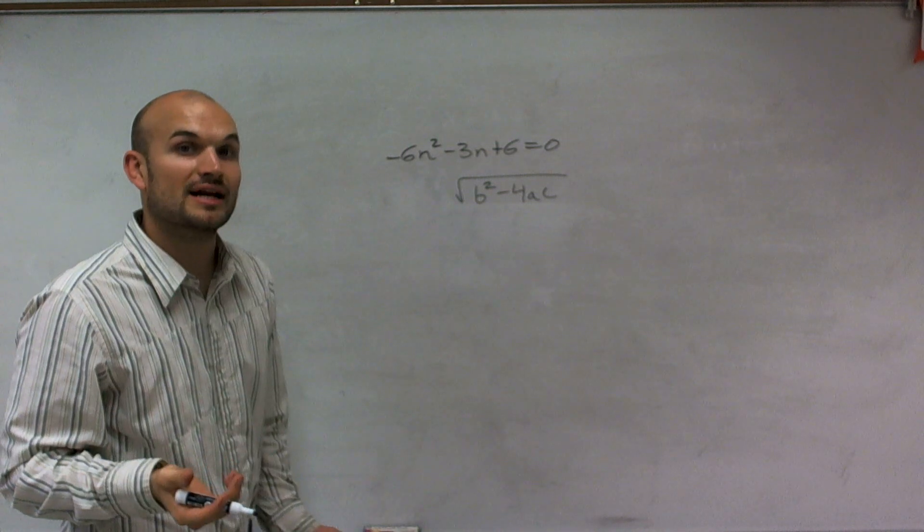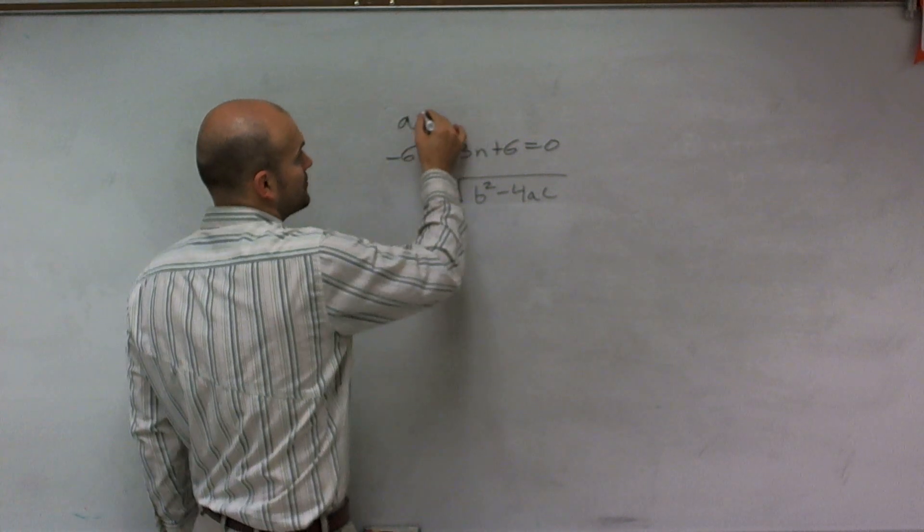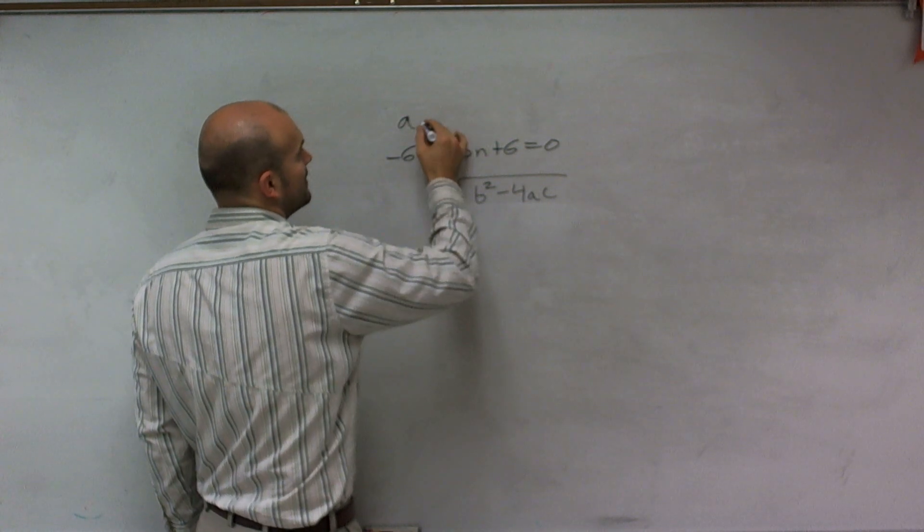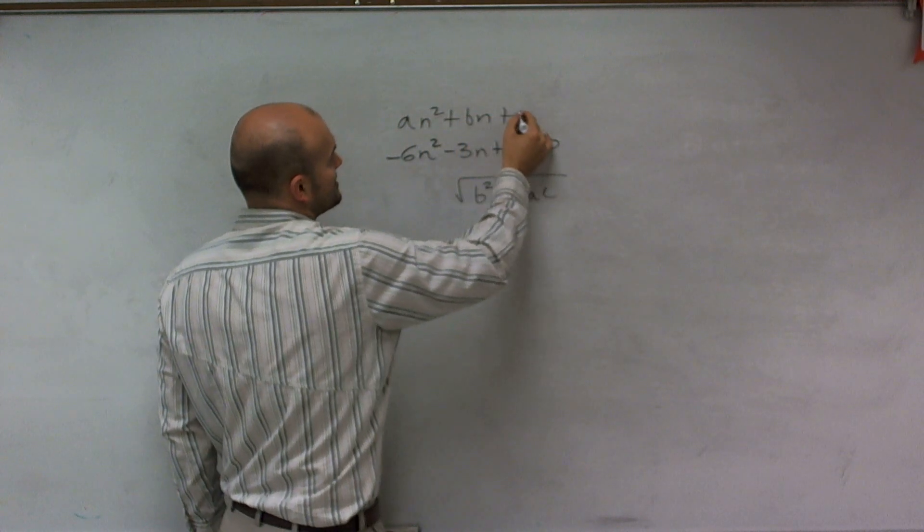Now remember, you can only use the quadratic formula on a quadratic equation, which can be rewritten in the form of an² + bn + c.